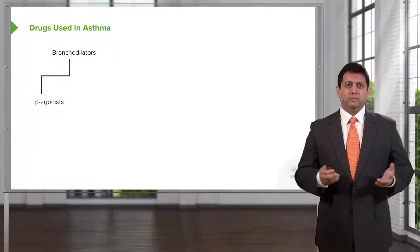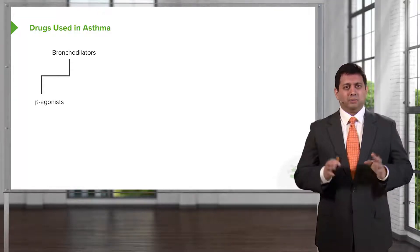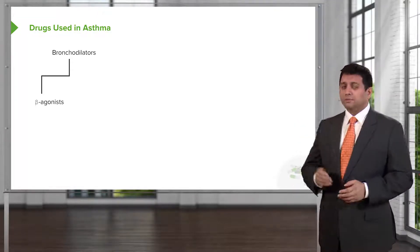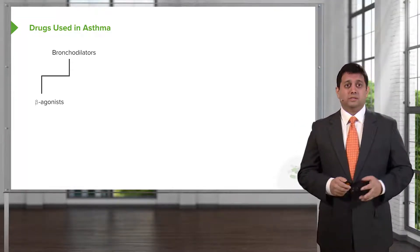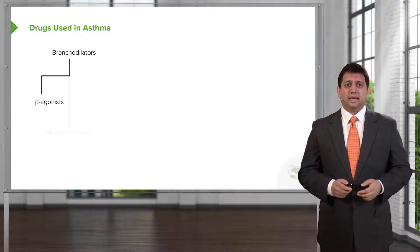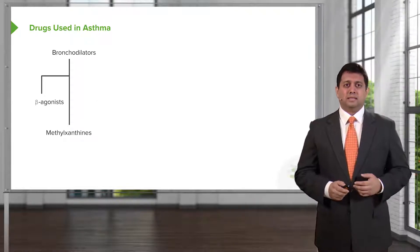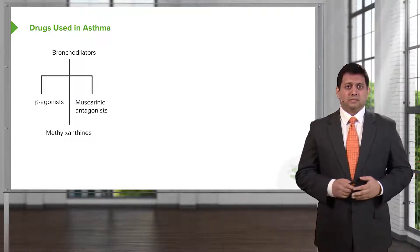When we talk about drugs used in asthma, we have lots of choices. We have the bronchodilators, such as the beta-agonists, the methylxanthines, and the muscarinic antagonists.